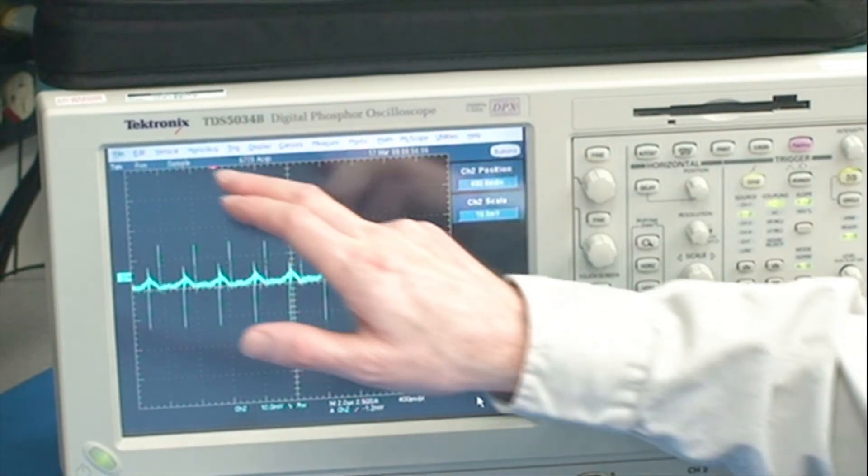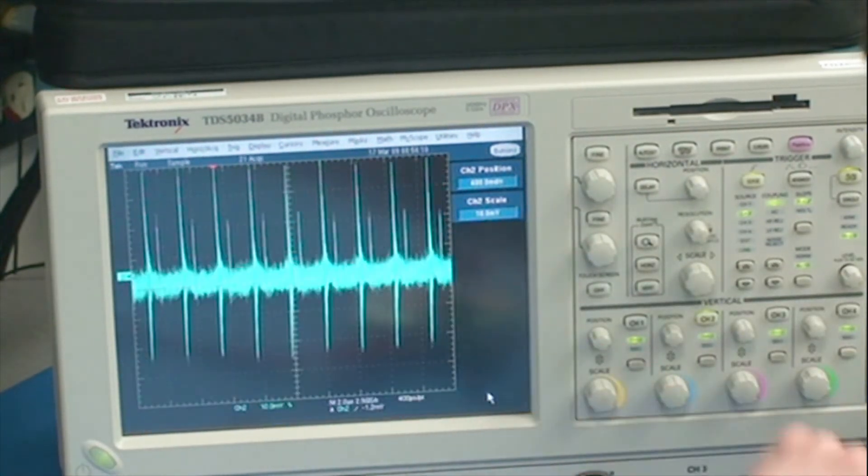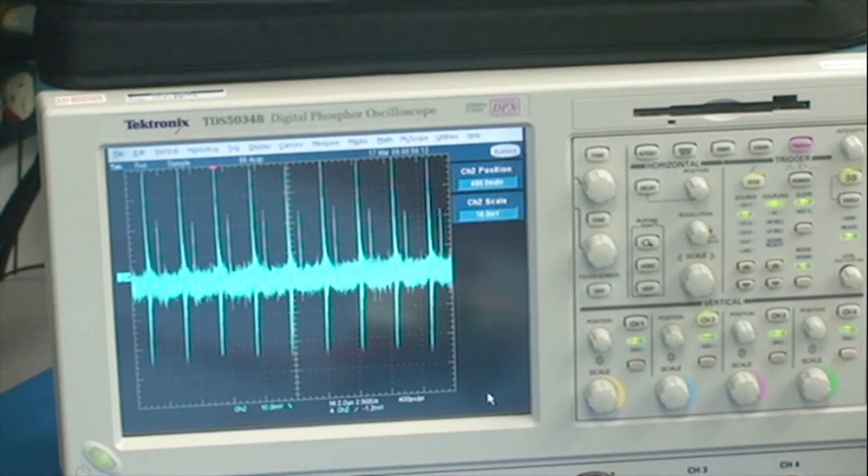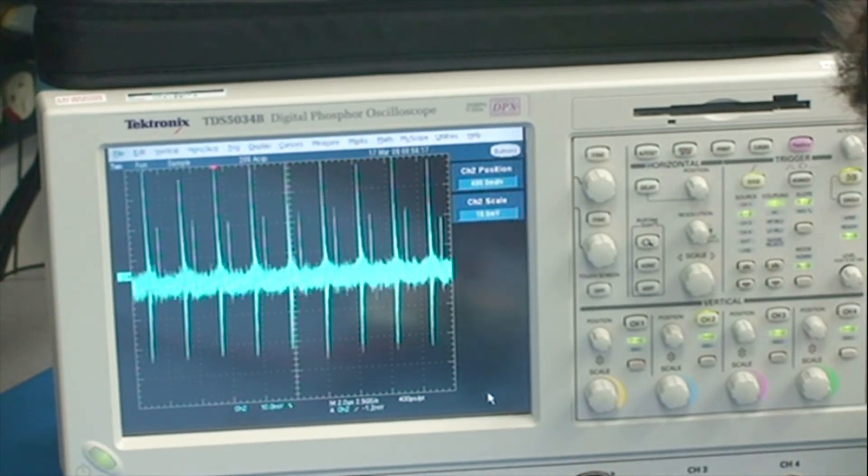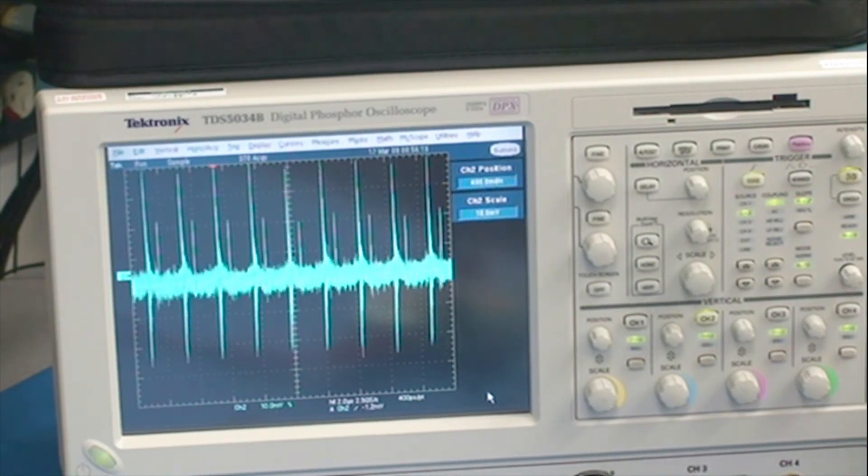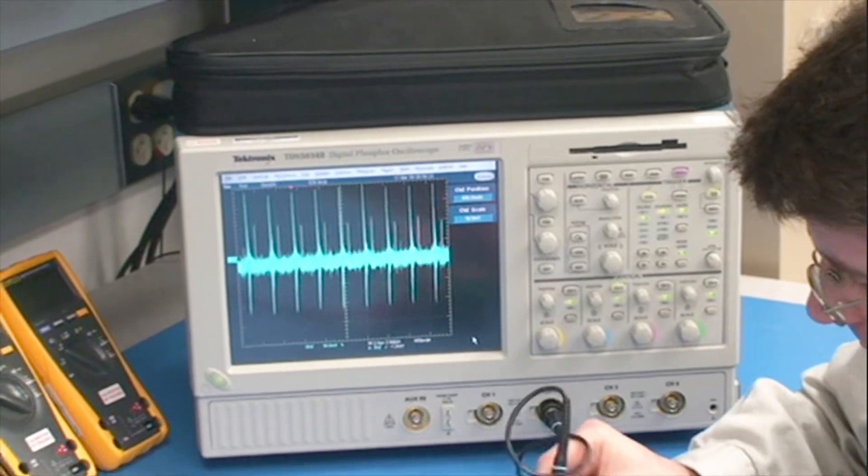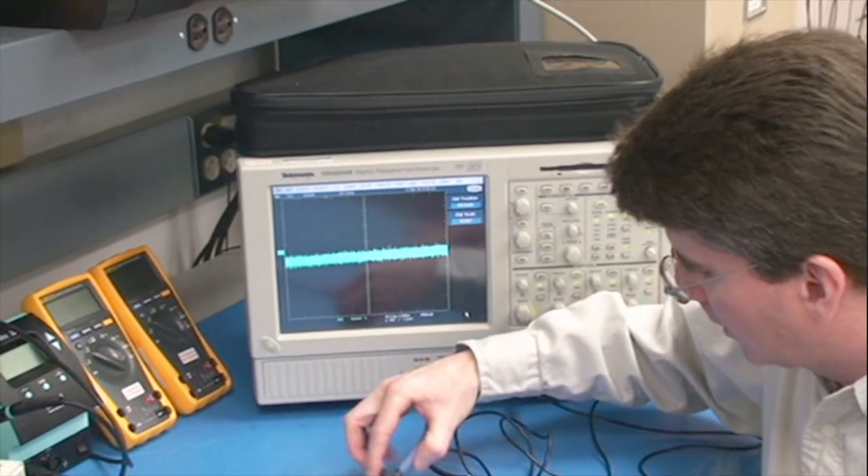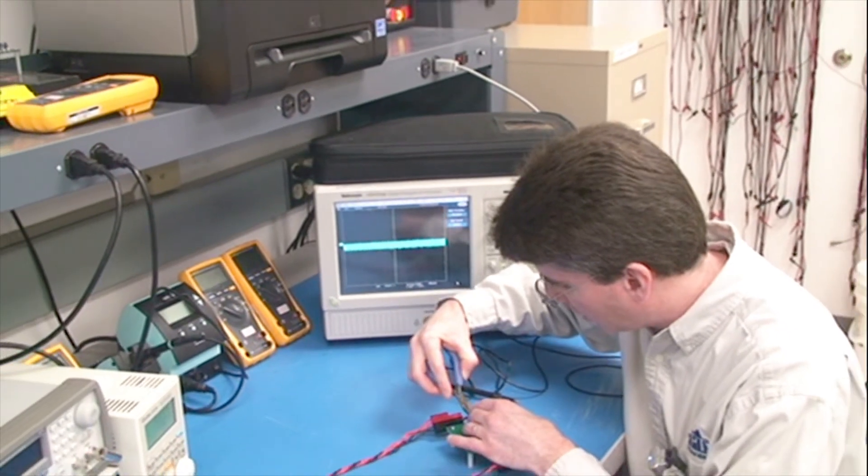Now if I turn the bandwidth limit off on the oscilloscope, I can see there's quite a bit more ripple, especially high frequency. Now the best way to filter this is to add an additional output capacitor to the converter, so we will do that very quickly. We'll use a low ESR ceramic capacitor.